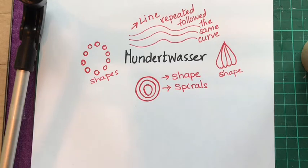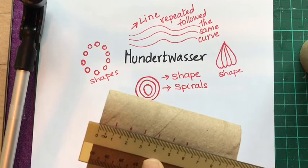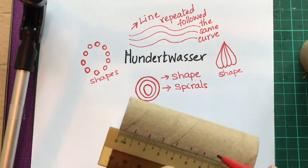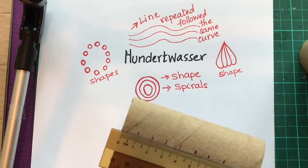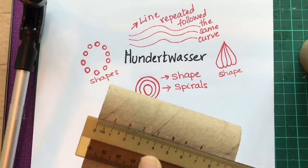I've selected Hundertwasser, who uses shape, line, and color in his artwork. I'm going to focus on the way he uses mainly shapes and spirals. I'm using a tissue roll and I have used a ruler so I have equal markings on it, and that will allow me to cut shapes that will be of equal size.